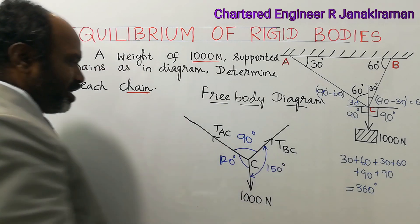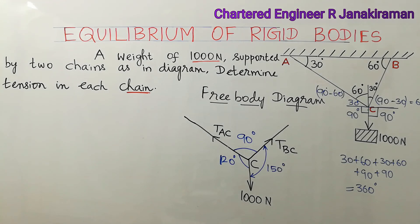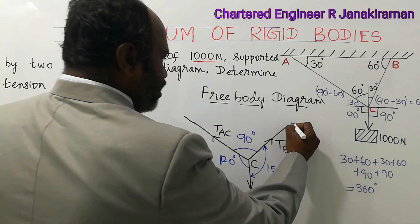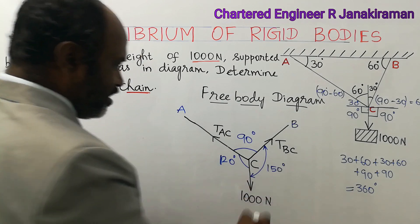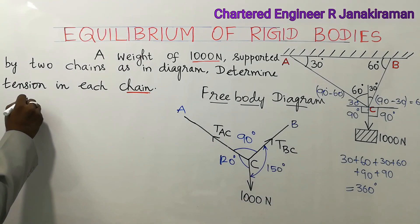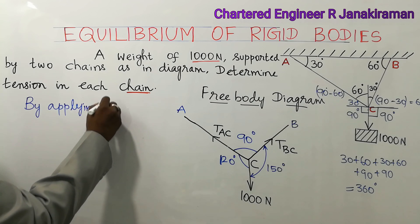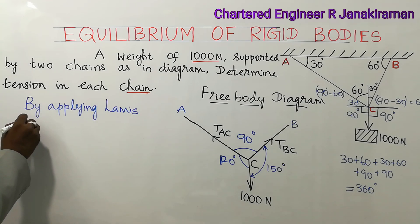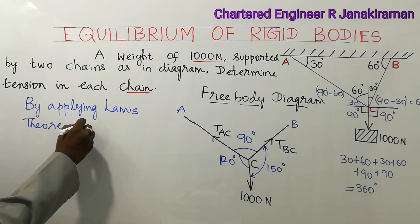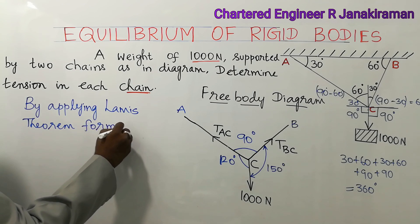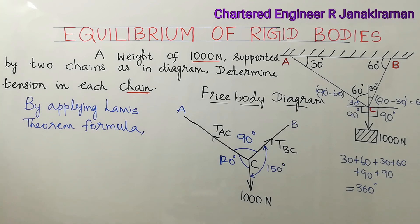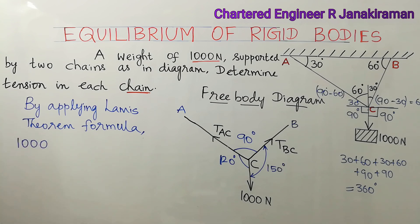So 90 plus 150 plus 120 equals 360 degrees — this confirms the angles are correct. Now at point C, with A, B, and the suspended weight of 1000 Newton marked, by applying Lami's theorem: the force or load divided by sine of the angle opposite equals T_AC divided by sine of the angle opposite, which means 1000 divided by sine 90.